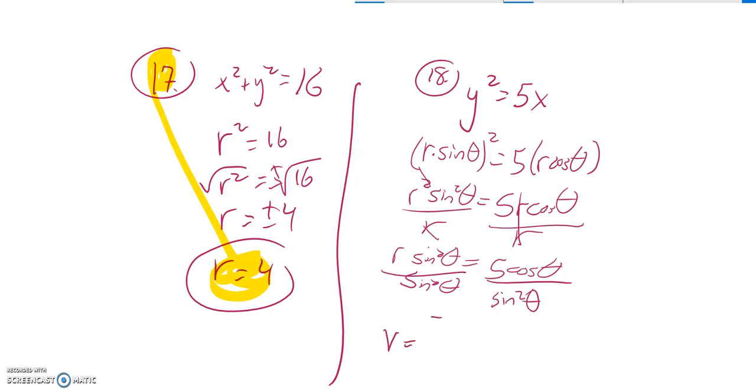And I want r all alone, so I'm going to divide both sides by sine squared theta. So r is equal to 5 times cosine theta over sine squared theta. So that is a true statement.